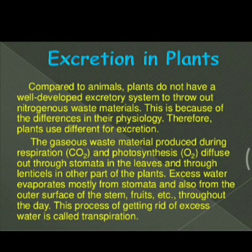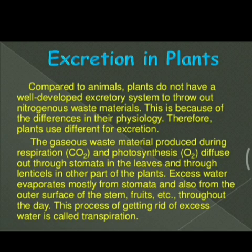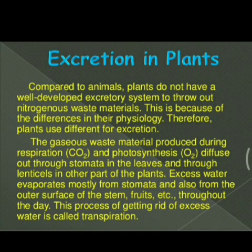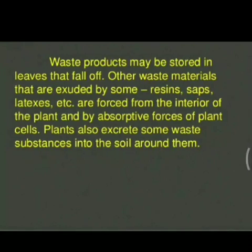Excess water evaporates mostly from stomata and from the outer surface of stem, fruit, etc. So due to evaporation, excess water is also excreted out. This process continues throughout the day, and the process by which the plant gets rid of excess water is called transpiration. The loss of water in the form of water vapors is called transpiration. So water, carbon dioxide, and oxygen are excretory substances for plants when they are in excess, and they are removed from the body through stomata or lenticels, as well as from the stem surface and fruit. These waste products may also be stored in leaves, which then fall off — this is another way waste leaves the plant body.